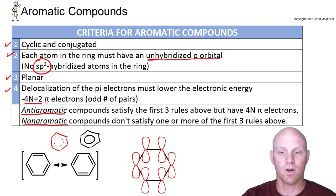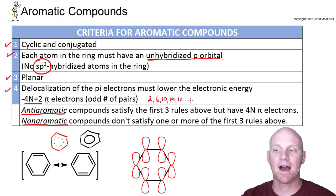So if n equaled zero, 4 times 0, 0 plus 2, that is 2. If n is 1, 4 times 1 is 4, plus 2 is 6. Then 10, then 14, then 18, and so on and so forth, all the way up to infinity.